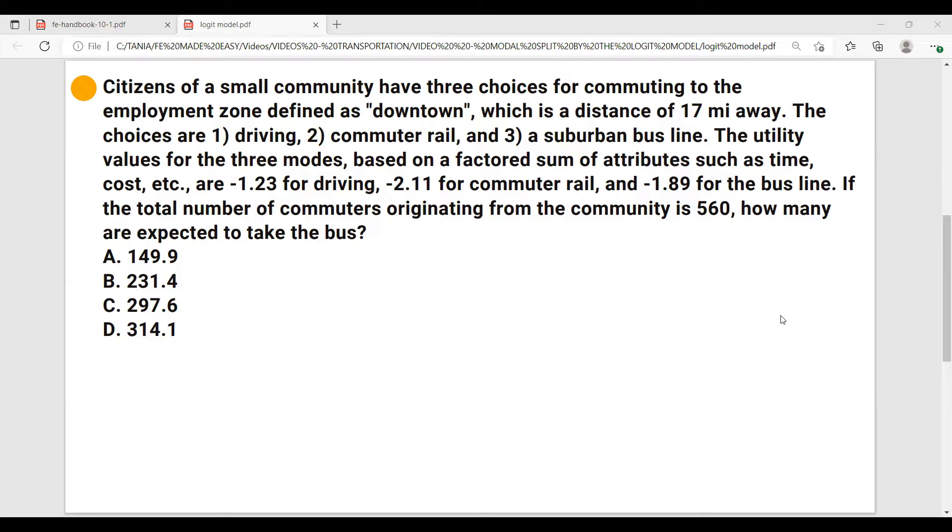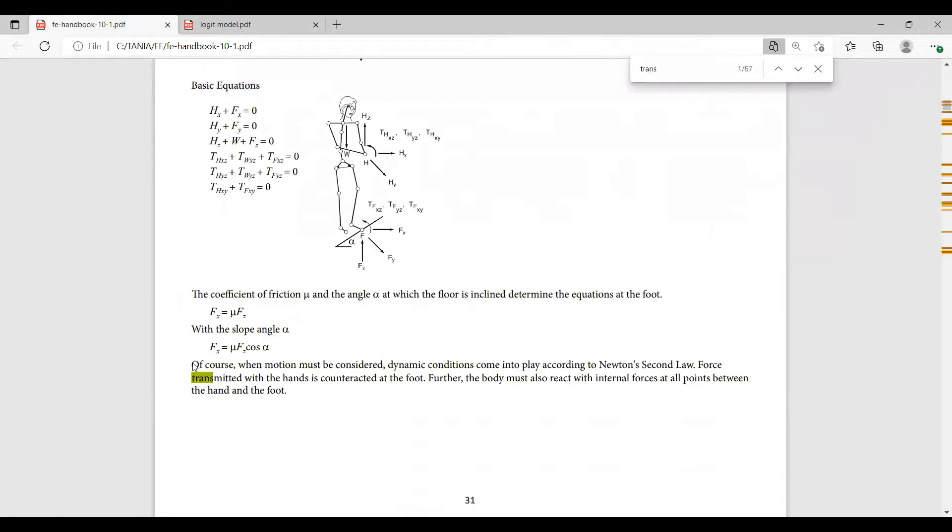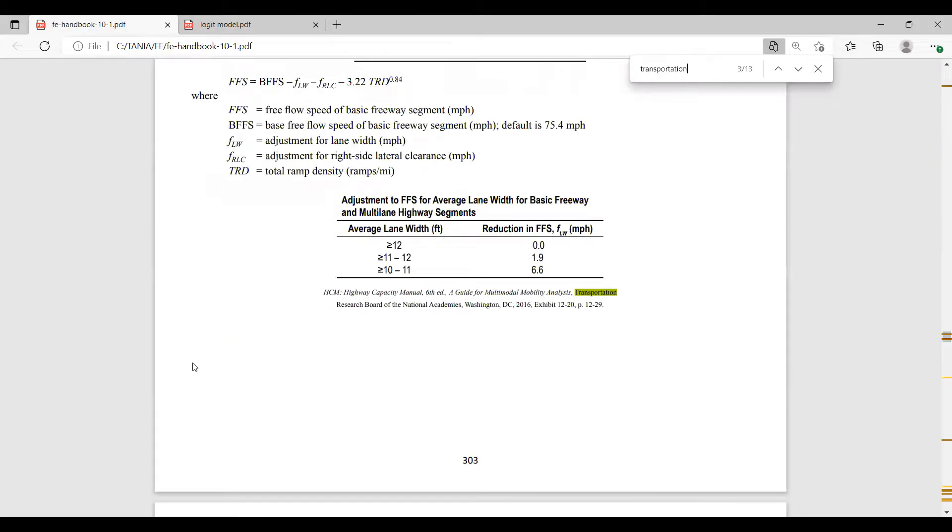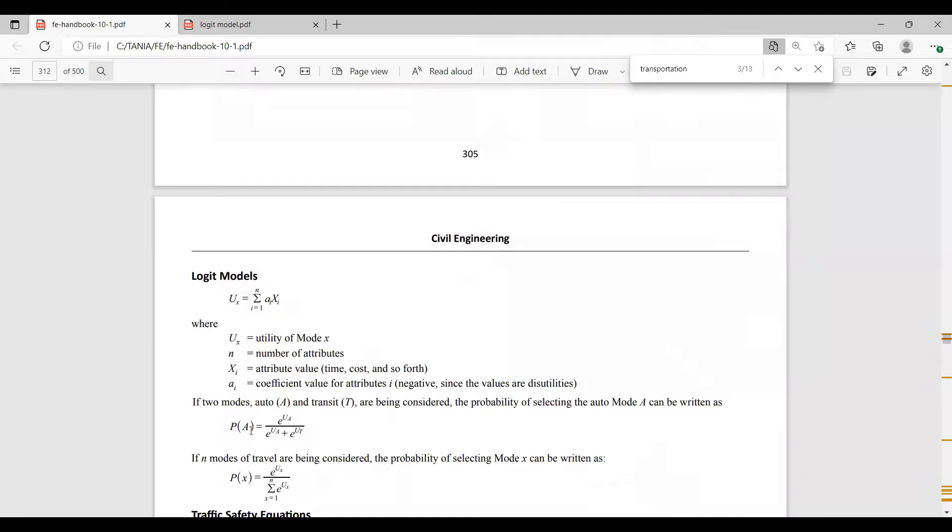Right, so when we have a few options of commuting ways, we must right away think of logit model. So let's go to transportation. I'll just write down transportation and let's go to our logit model formula. Logit models, there you go. Here is the formula that is going to help us determine how many out of 560 people are expected to take the bus. So the FE handbook is giving this formula if two modes, auto and transit, are being considered. The probability of selecting the auto mode A can be written as...